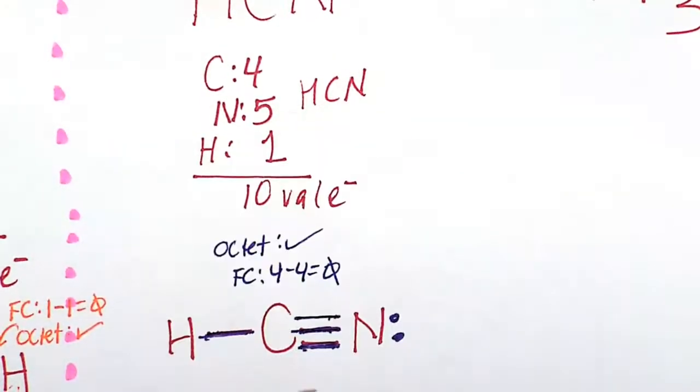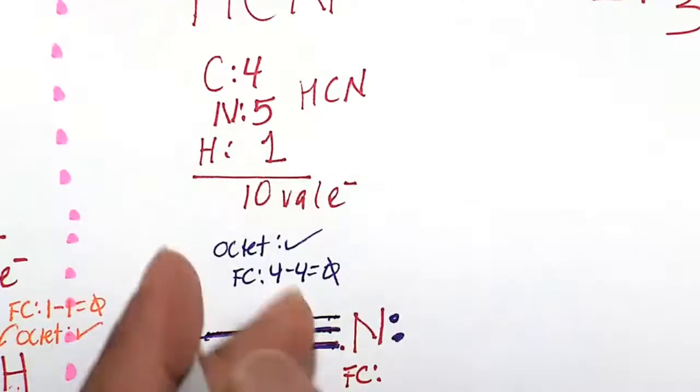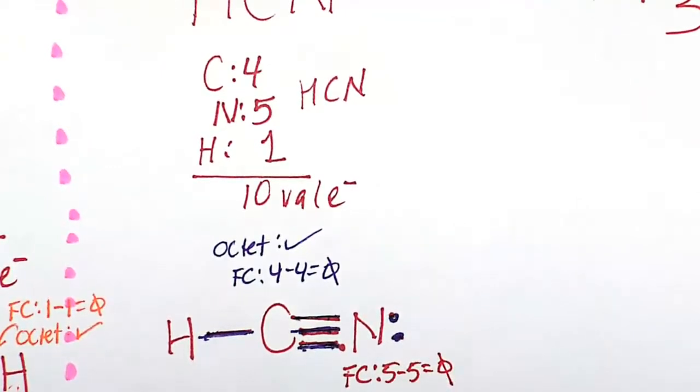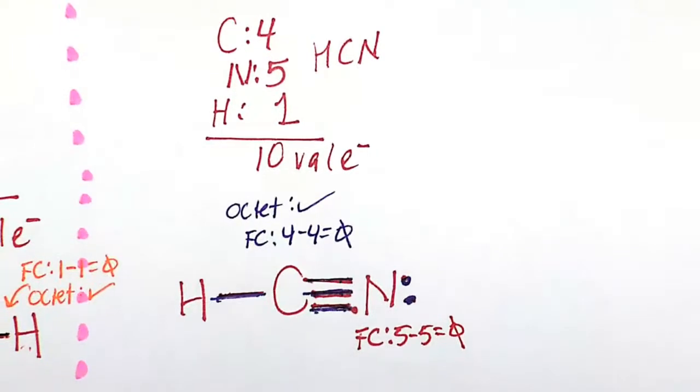And let's do the formal charge and octet for nitrogen. It's formal charge. Here we're going to count these bonds as 1 for the formal charge, happy minus the number of electrons around the atom. This gets counted as 1, counting to 5. Nitrogen happy at 5. There's 5 around it. So this has a zero formal charge for the nitrogen, which is great.